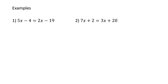So let's think about our three rules — we want letters left, numbers right. The first thing I'm going to do is identify things that are in the wrong place. I've got 5x, which is letters on the left-hand side, so I'm happy with that. I've got negative 4, which is a number, so that's on the wrong side — I want that on the right-hand side. I've got 2x on the right-hand side — I want that on the left-hand side. And I've got negative 19, which is a number, so that's in the right place.